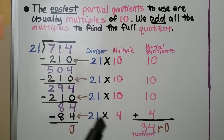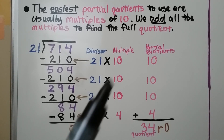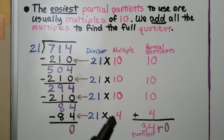21 times 4 is 84. We subtract that and get 0. We add our partial quotients of 10, 10, 10, and 4, and get a quotient of 34 remainder 0.